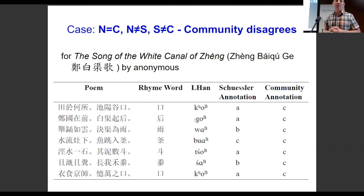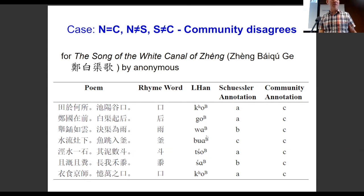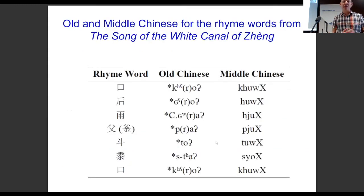Here's a case where the naive and community annotators agree but disagree with Schussler. It has an interesting rhyme structure of A, A, B, C, A, B, A according to Schussler. The reason two characters marked A are treated as different is that one has a UA diphthong, not a medial U, so the Schussler annotator considers it different. Looking at Old Chinese and Middle Chinese reconstructions for these, you also see an A, A, A, B, B, A, B, A structure.